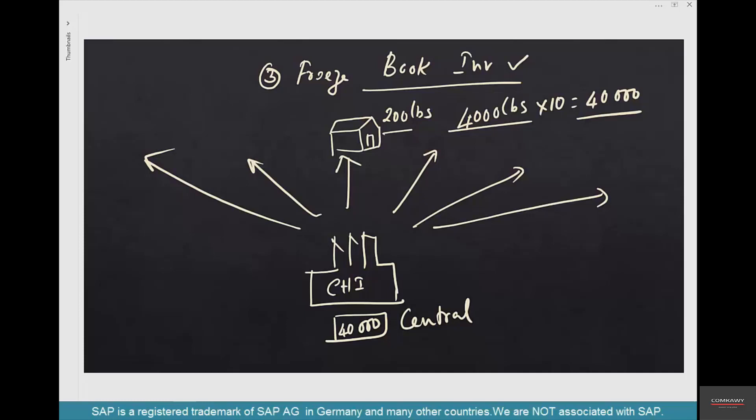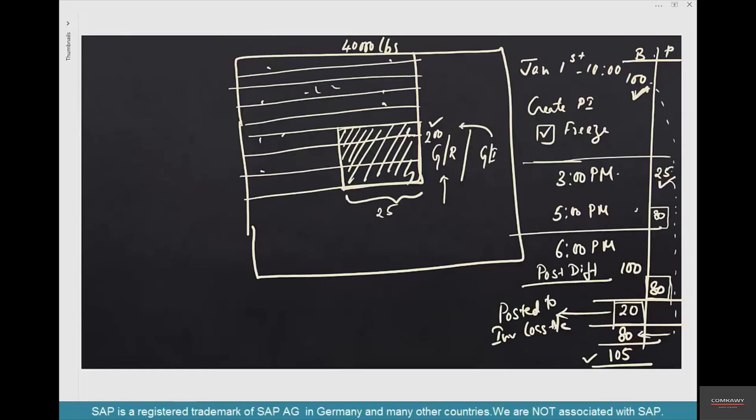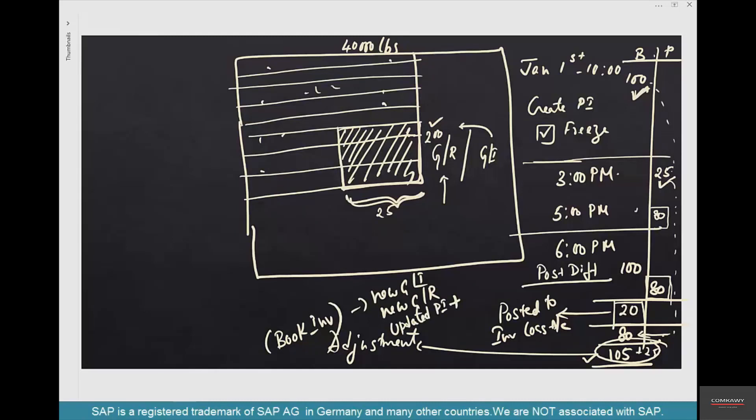After you post the differences, then any subsequent goods receipts or goods issues that have happened in this lot, the separate lot, will be adjusted. This process is called adjustment. SAP will automatically adjust the book inventory to account for new GI, new GR, plus updated physical inventory. New GI or new GR is this additional material that has been either sent out or that came in. Updated PI is 80 because we have physically counted 80 instead of the original 100. So 100 plus 25 is 125 will be the new book inventory. Now let's do this in action.